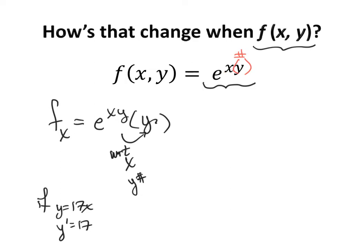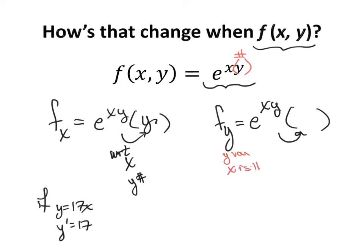Let's go ahead now and find the first order partial derivative with respect to y. We rewrite the function exactly as it is, then chain rule out with respect to y. Now y is the variable and x is the number. When we chain rule that derivative out, we get just x. So rewriting that: the partial with respect to y gives x times e to the xy.